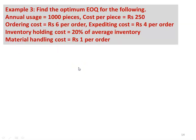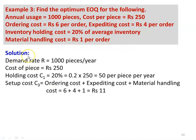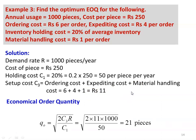Example 3: Find the optimum EOQ for: annual usage 1,000 pieces, cost per piece rupees 250, ordering cost rupees 6 per order, expediting cost rupees 4 per order, inventory holding cost 20 percent of inventory, material handling cost rupees 1 per order. Holding cost C1 equals 0.2 times 250 equals rupees 50 per piece per year. Setup cost C3 equals 6 plus 4 plus 1 equals rupees 11. Economic ordering quantity Q_O equals square root of 2 times 11 times 1,000 divided by 50, equals 21 pieces.